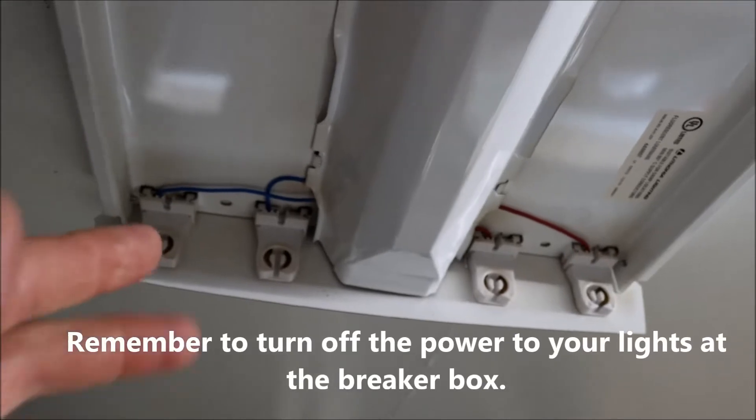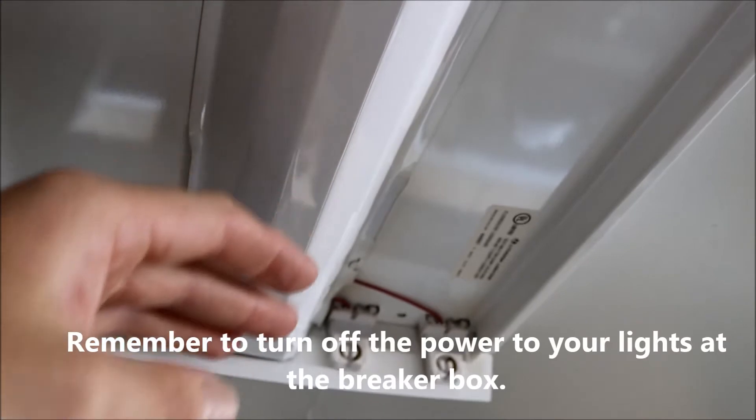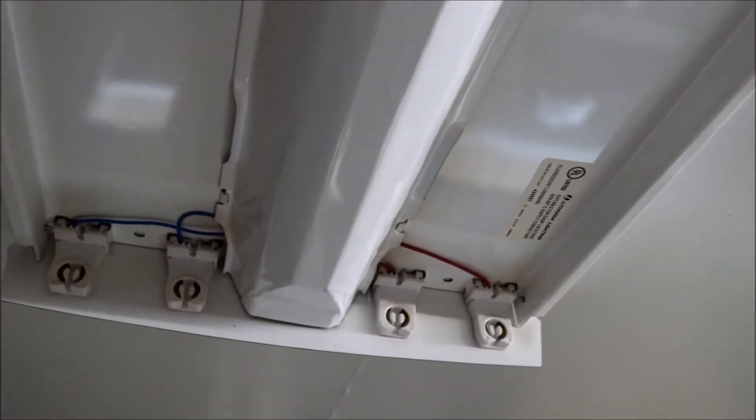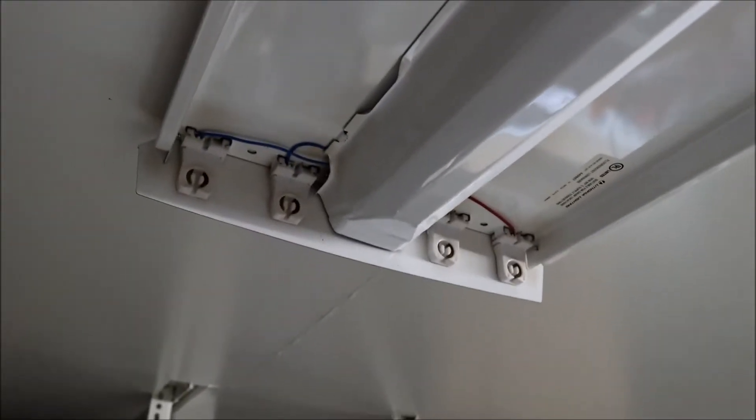Here we are, we already took out the four bulbs. As you see, we have the cover here which we had to take off, and that's where the ballast will be. Once we get that off, we'll cut out the ballast and redo all the wiring.